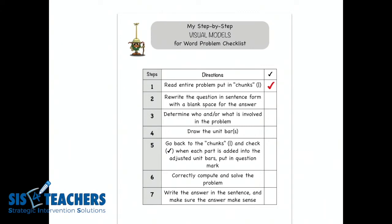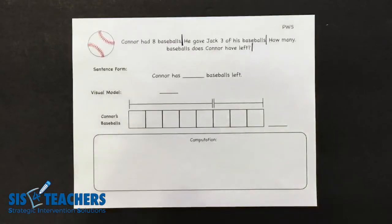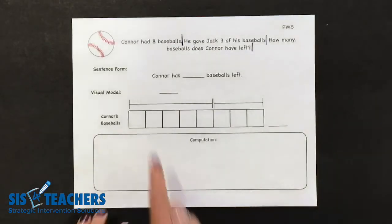Step two in our visual model process is to rewrite the question in sentence form with a blank space for the answer. Oftentimes kids want to rush into — do we add, do we subtract? We want to slow this process down because we're not going to start talking about computation until step six. So let's go back to our journal and take a look.